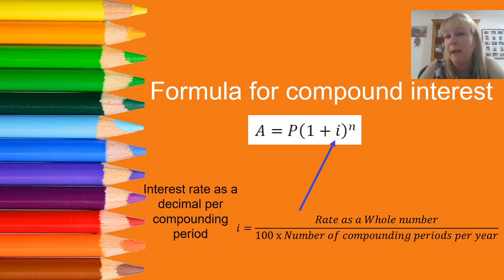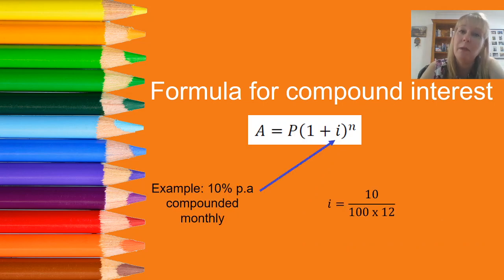So our formula for compound interest, if you remember I said that i was the interest rate per compounding period. Well the way that we calculate that is to take our rate as a whole number, so let's say it was four percent, that would be four, divide that by 100 to convert it to a decimal and then multiply that denominator by the number of compounding periods per year. So here's an example, 10 percent per annum compounded monthly. What that i would look like would be 10 divided by 100, that's 0.1, the interest rate as a decimal, but that 0.1 is multiplied by 12 on the denominator. It's very important it's not multiplied on the numerator but on the denominator.